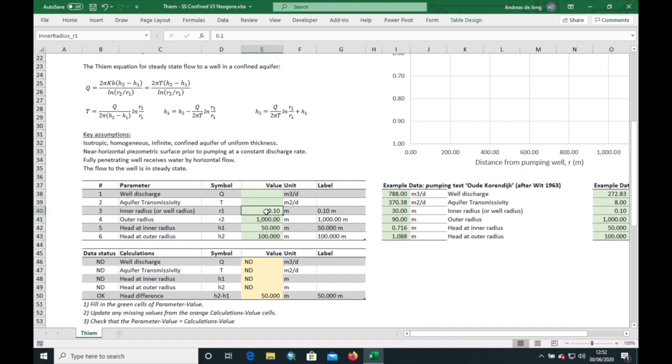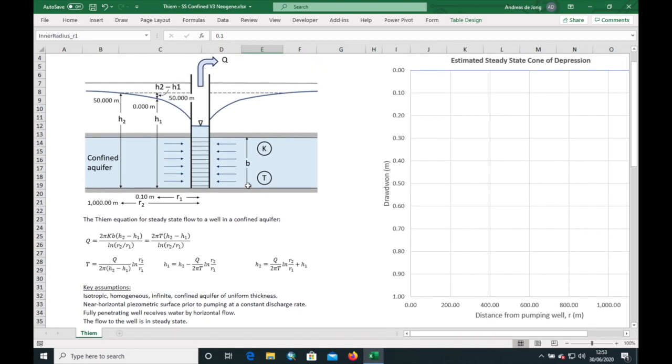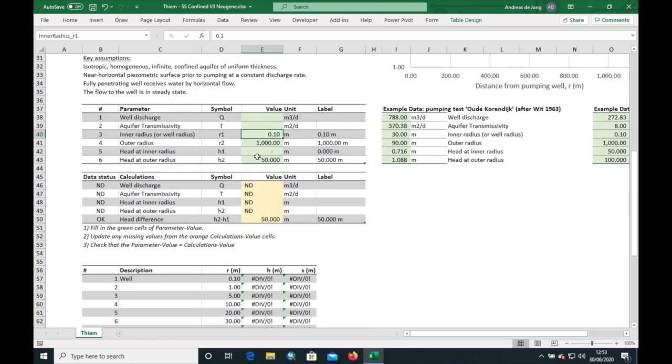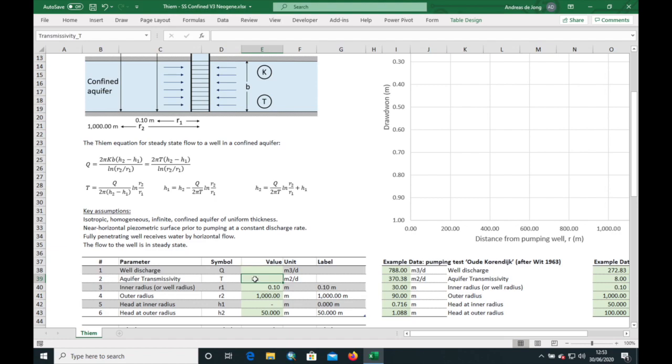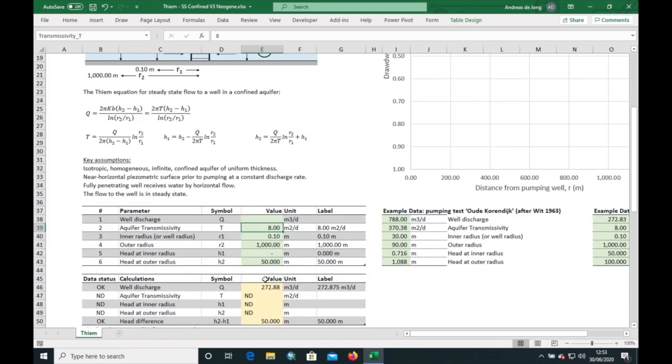I've already entered the inner radius, the radius of the well 0.1 meter, the outer radius 1000 meters. Then we have to add the head of the inner radius and outer radius so that the drawdown here is 50 meters. Now I've just put in 50 and 100, but I could easily have put in for example 0 here and 50 here. It has the same effect. We just want to end up with 50 meters of drawdown at our inner radius. Let's add the actual transmissivity. Watch this space carefully as I enter the 8 here. Enter, and up pops our transmissivity. This is a label that has a live link to this label field here.